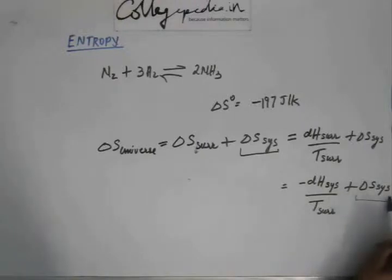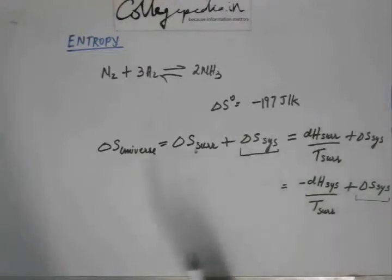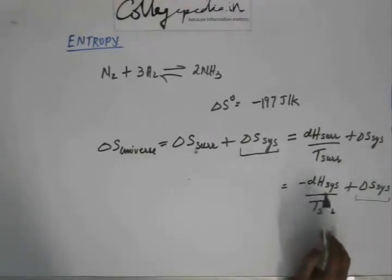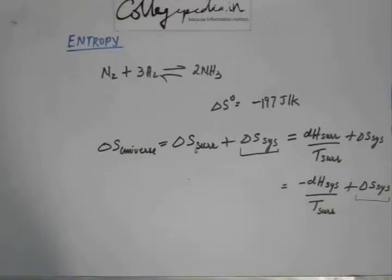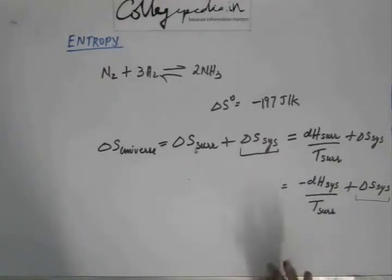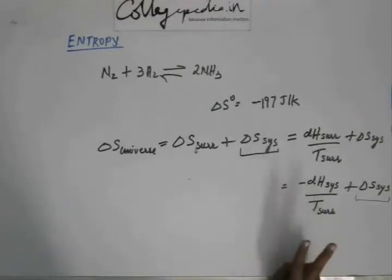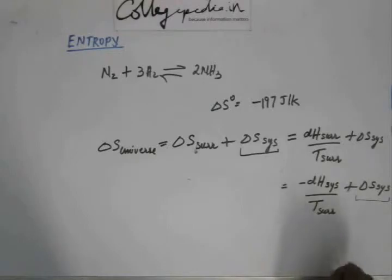Delta S of system stands as it is because I have data for delta S of system — I will calculate it directly. Delta S of surrounding is written as delta H of system divided by T of surrounding. T of surrounding would be known and delta H of system is known because I can calculate all quantities for the system. From this expression I can calculate delta S of universe.